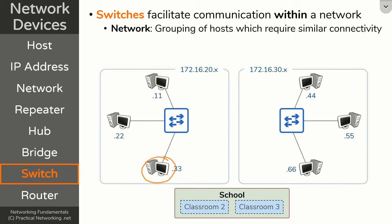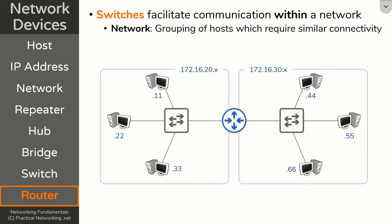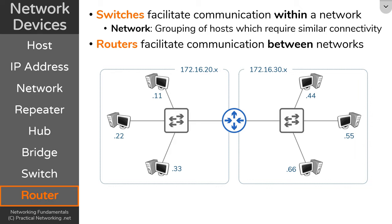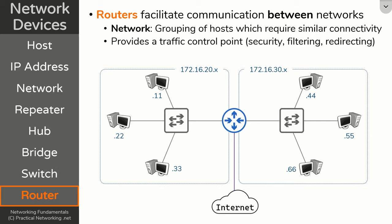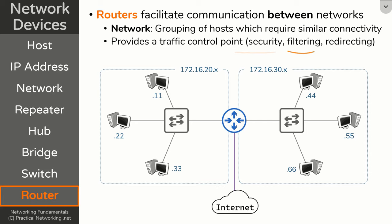But what happens if a host on one network wants to speak to a host on a different network? If a switch can only facilitate communication within a network, we would need another type of device to handle communication between networks — and that device would be a router. A router is a device whose primary purpose is to facilitate communication between networks. At the very least, you're going to need that router to connect you with the ultimate network of networks known as the internet. Routers provide traffic control points between networks. Since these two PCs are on separate networks, all that traffic has to flow through the router, creating a great place to add security policies, traffic filtering, or even redirecting traffic elsewhere entirely.